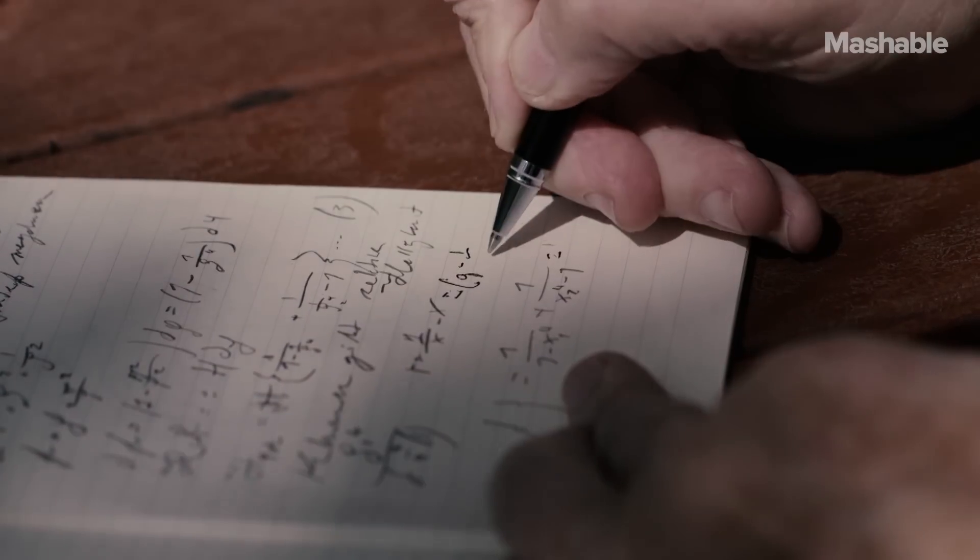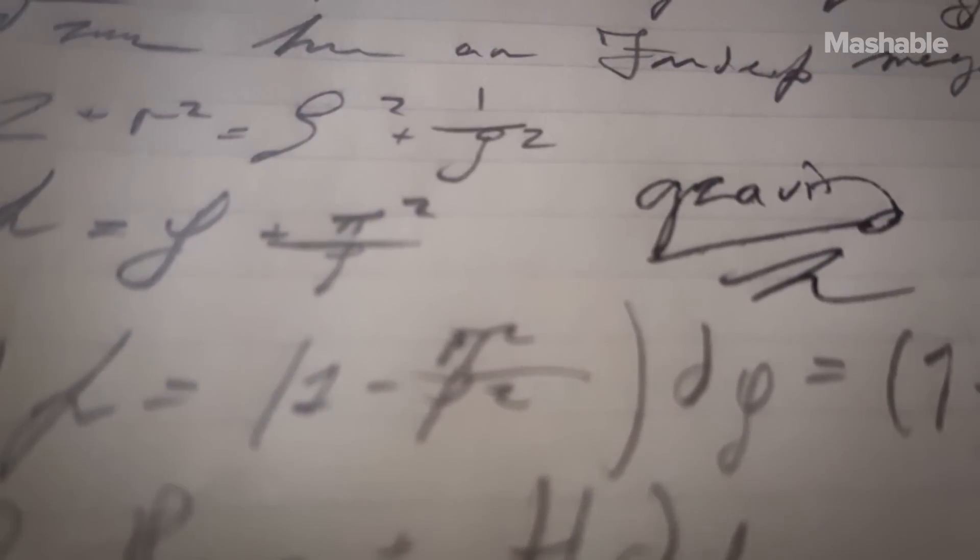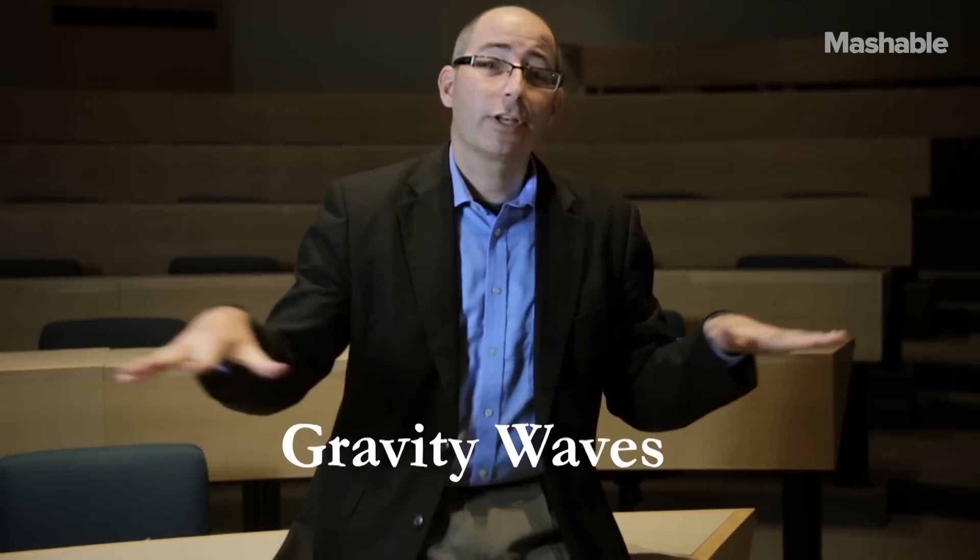Arguably Einstein's greatest scientific legacy is his general theory of relativity, his elegant theory of gravity. What he wound up showing was that space and time, the fabric of gravitation, can ripple. It can actually have waves of gravity.